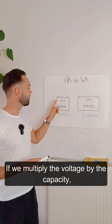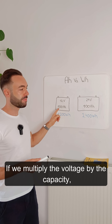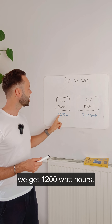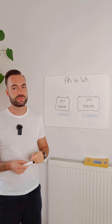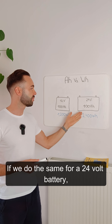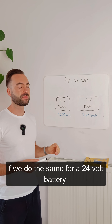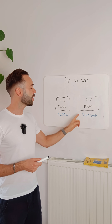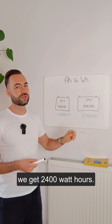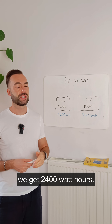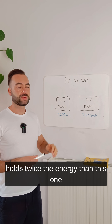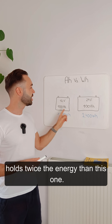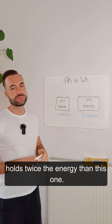If we multiply the voltage by the capacity we get 1200 watt hours. If we do the same for a 24 volt battery we get 2400 watt hours. So this battery holds twice the energy than this one.